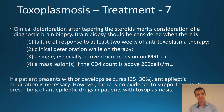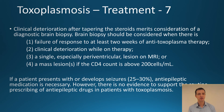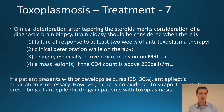Brain biopsy should be considered when one of four things occurs: first, failure of response after at least two weeks of anti-Toxoplasmosis therapy; second, clinical deterioration while on therapy; third, a single especially periventricular lesion on MRI suggesting primary CNS lymphoma; or a mass lesion if the CD4 count is above 200 cells. If the patient presents with or develops seizures — which occurs in 25 to 30 percent — anti-epileptic medication can be given as necessary but should not be given routinely in patients without seizures.